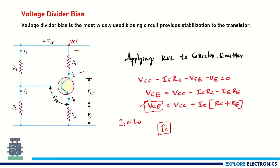This is all about voltage divider biasing. Remember that R1 and R2 form the voltage divider circuit for fixing the base voltage VB.